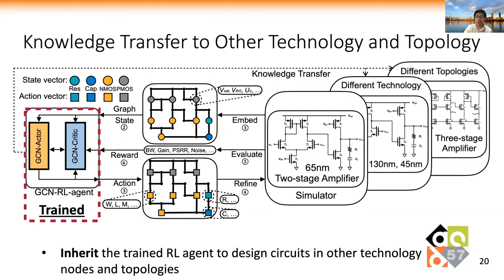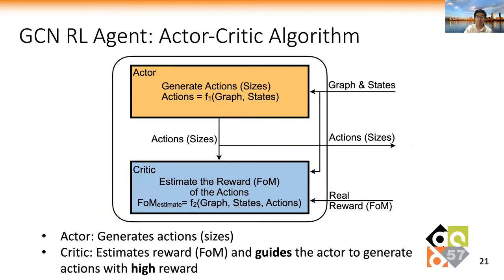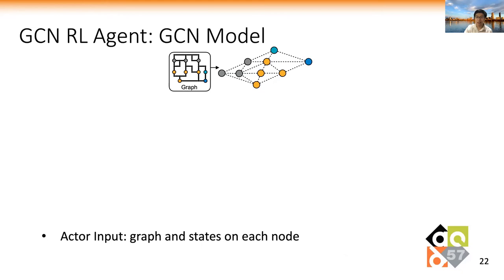To perform knowledge transfer, we can inherit the trained RL agent to design circuits in other technology nodes and different topologies. We apply the actor-critic algorithm as the RL agent. The actor generates the actions, and the critic estimates the reward of the actions and then guides the actor to generate actions with high rewards. For both the actor and critic, we use GCN as models.